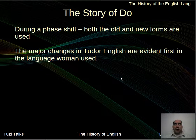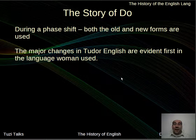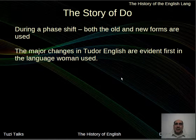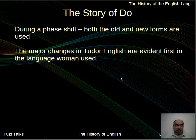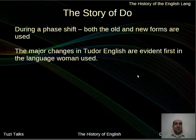The major changes in Tudor era English are evident in women first, who are making changes within written correspondence. Mugglestone notes that women are often the vanguard in using and changing language. I do recommend investigating the OED — the Oxford English Dictionary — which spans about four feet of books and includes a ton of information about the history of words: when a word was first identified in text, where it was used, and how it was used.